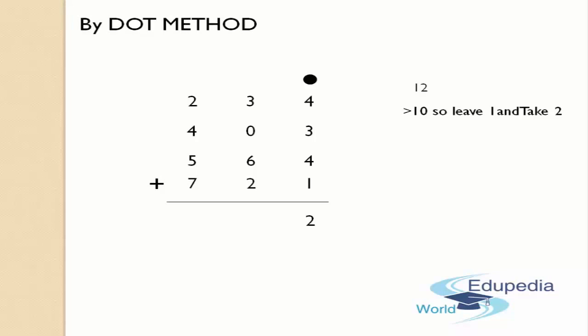This dot count of 1 should be added to the next column, starting from the tens place digits. 1 plus 2 is 3, 3 plus 6 is 9, 9 plus 0 is 9, and 9 plus 3 gives 12 again. This is greater than 10, so leave 1 — place a dot on top of the number that made you reach 10 or more, that is on top of 3 — and write the remaining 2 in the answer's place. Count the dots in the second column: only 1.